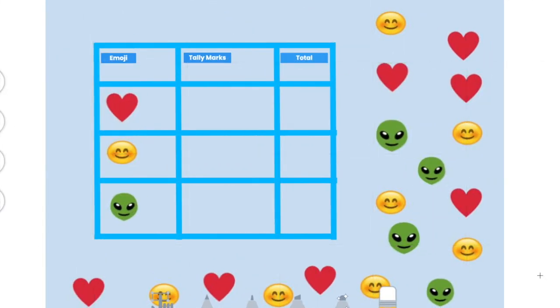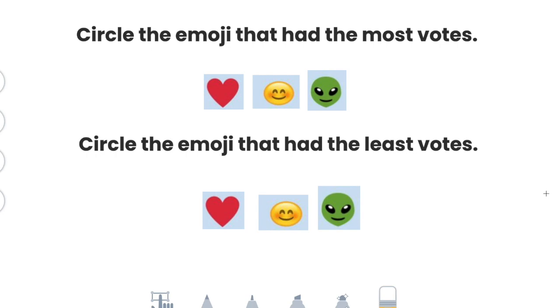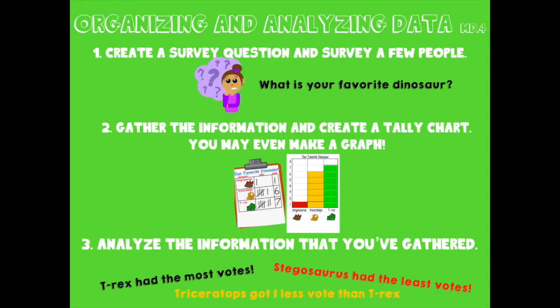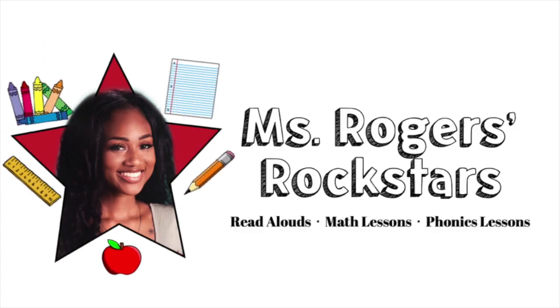Okay Rockstars, now it's your turn. Go into Seesaw and complete the tally chart. Once you're done, go to the second page and answer the questions. Our focus was standard MD4 for organizing and analyzing data. Remember: whenever you're organizing and analyzing data, you need to first create a survey question, then gather the information using a tally chart, and then analyze that information by asking and answering questions. Well, that's all for today — see you soon!